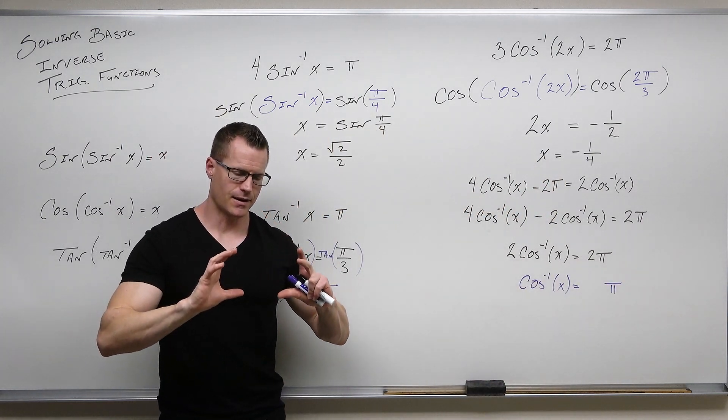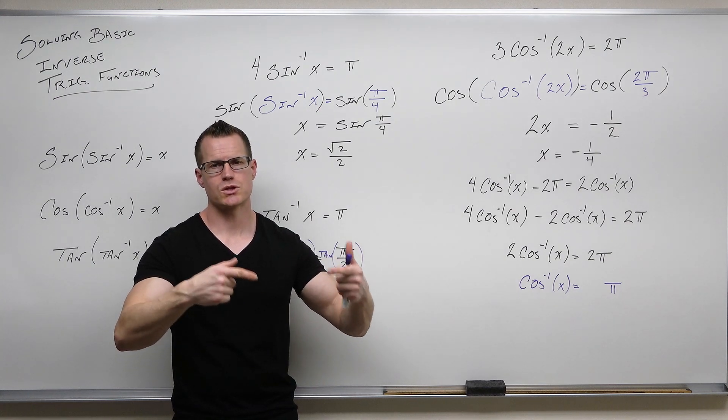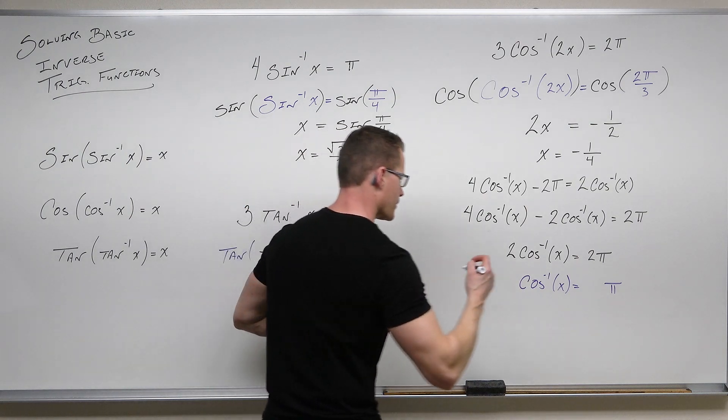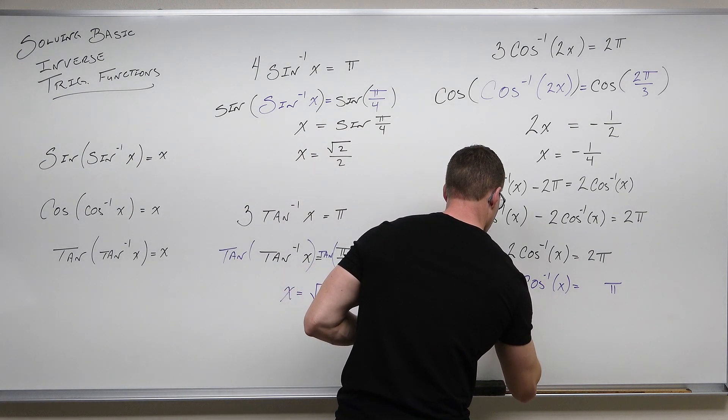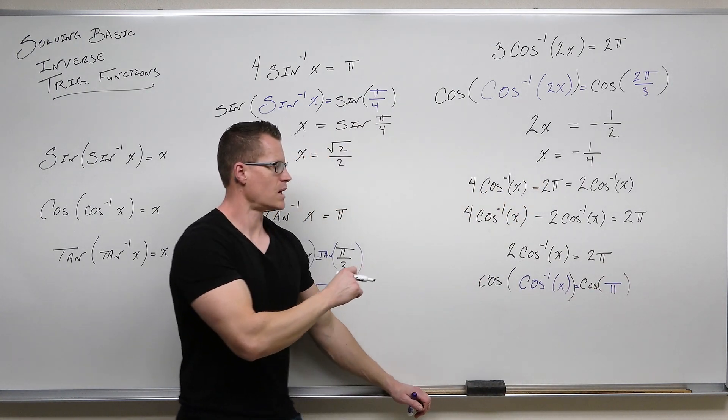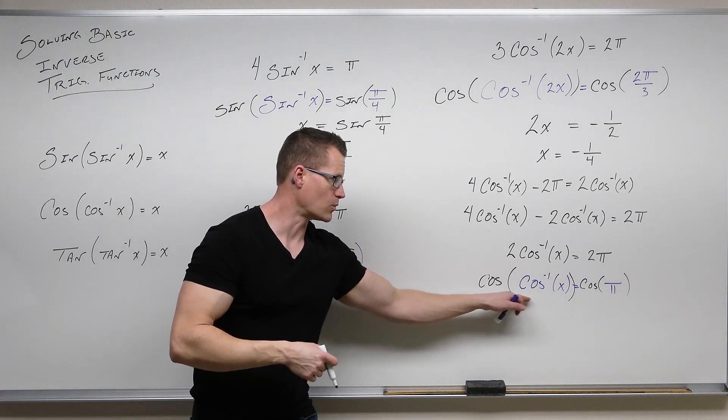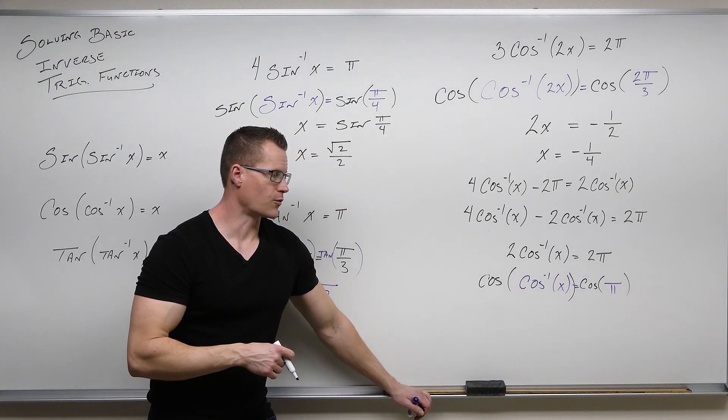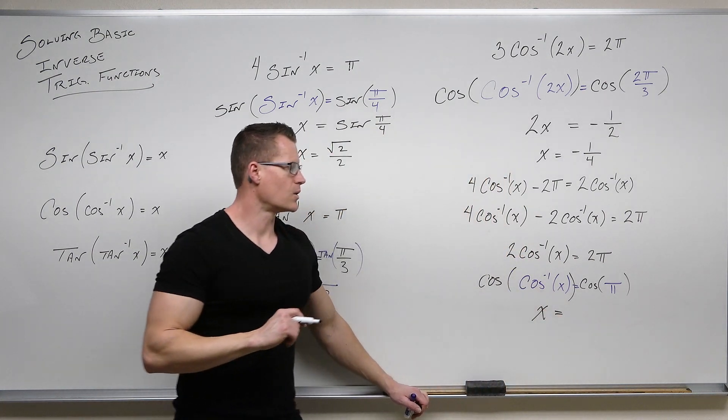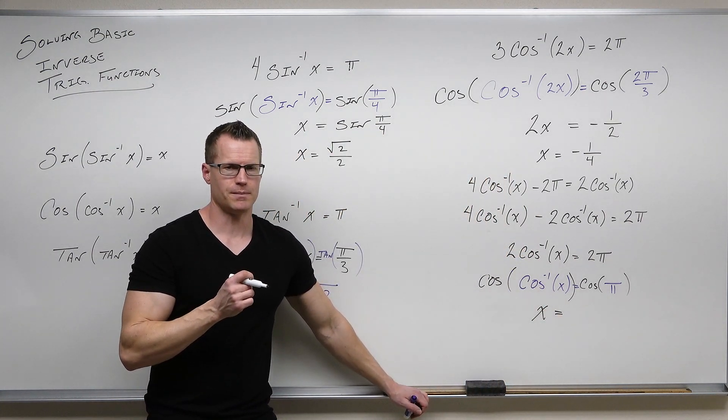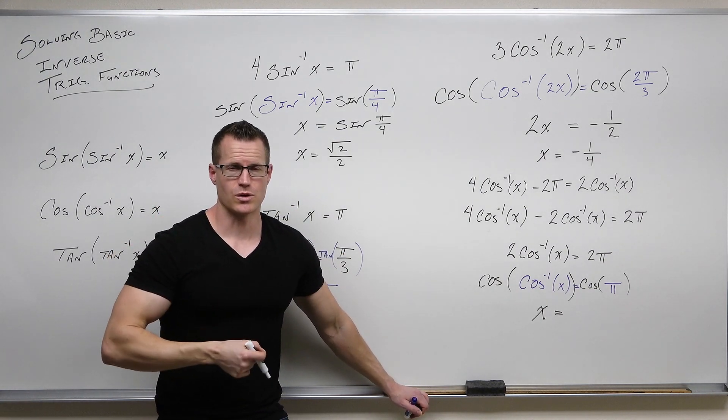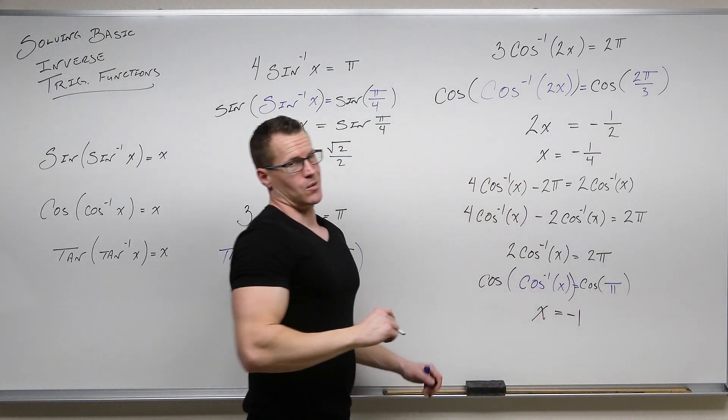Lastly, now that we've isolated that inverse function, we need to use cosine, the appropriate function that's going to get rid of cosine inverse on both sides of our equation. Because cosine of cosine inverse simplified, that's literally one of our identities there for inverse functions. We're going to get x. On the right-hand side, cosine of π is -1. So cosine of 180 degrees or π, that's going to be -1,0, the x coordinate's -1. We know that's -1.